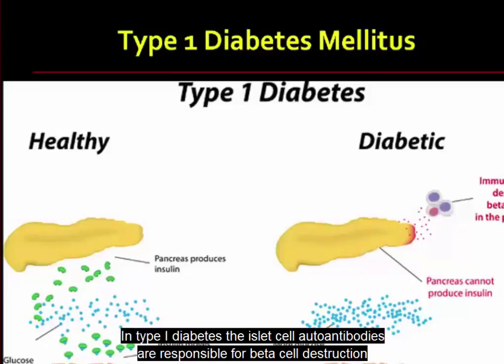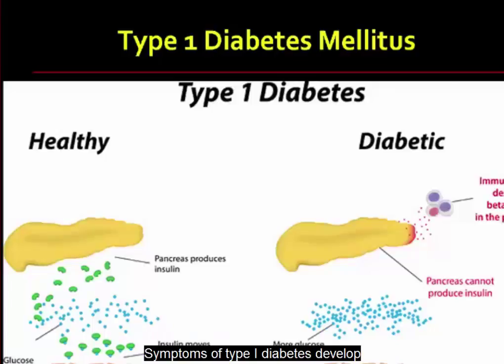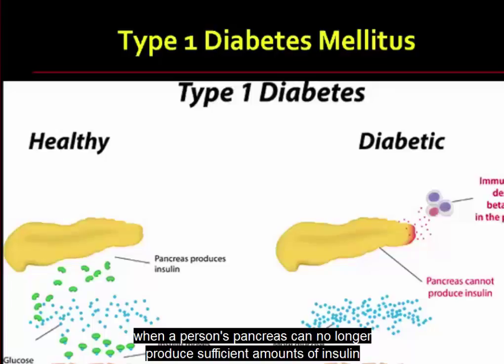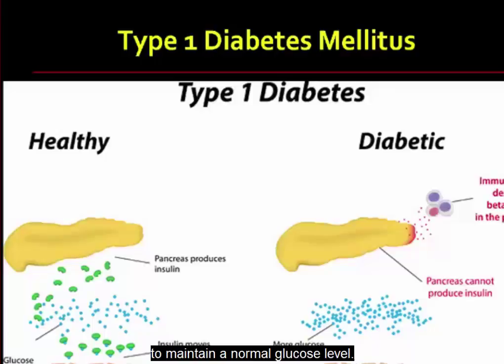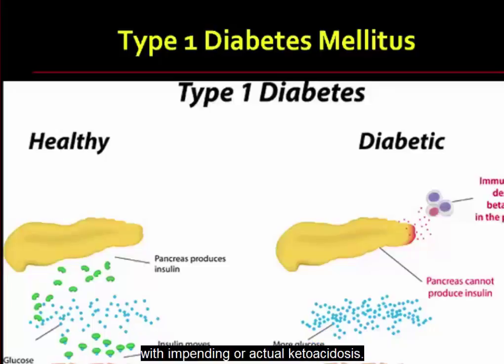In type 1 diabetes, the islet cell autoantibodies are responsible for beta cell destruction and are present for months to years before the onset of symptoms. Symptoms of type 1 diabetes develop when a person's pancreas can no longer produce sufficient amounts of insulin to maintain a normal glucose level. Once this occurs, the onset of symptoms is usually rapid and patients present with impending or actual ketoacidosis.